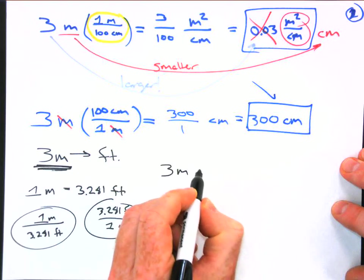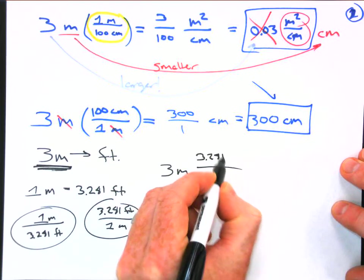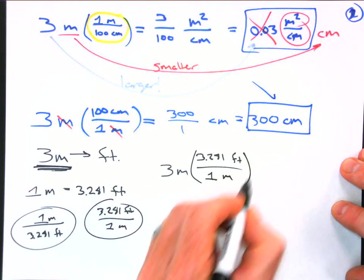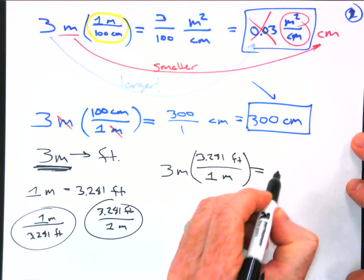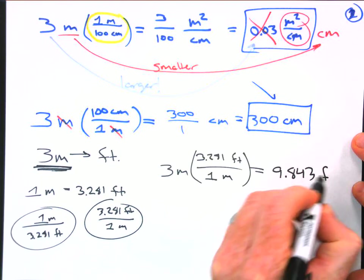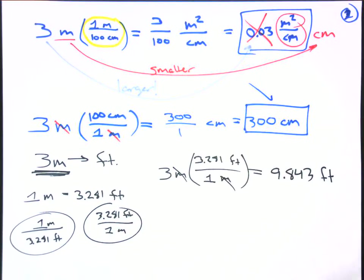So let's set the problem up. Three meters, and we have a fraction, 3.281 feet divided by one meter. And so now we're going to get this answer, 9.843. And the answer is feet because meters canceled out. Awesome.